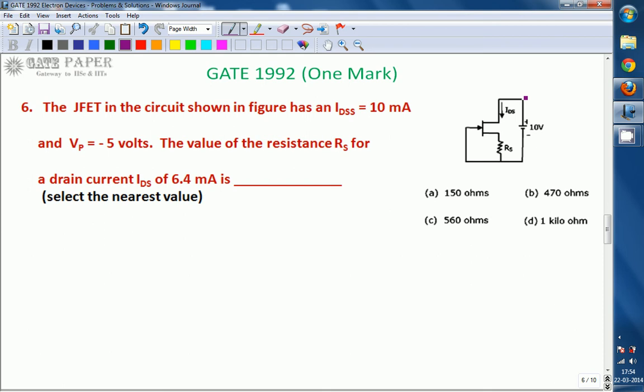We are calculating the value of RS. RS value can be calculated only when you know the voltage drop across this RS and current flowing through this RS. IDS is the current flowing from drain to source. This is N channel JFET with gate, drain terminal, and source terminal.